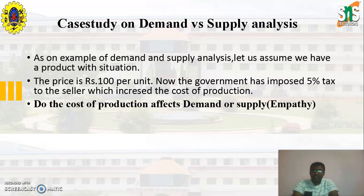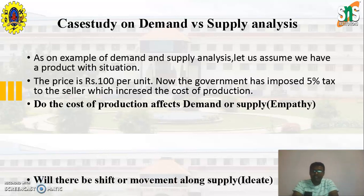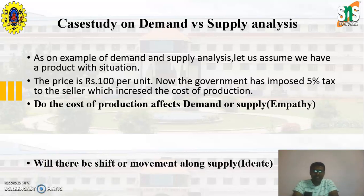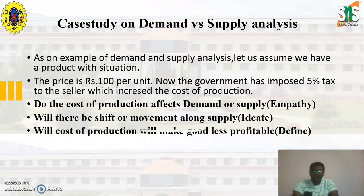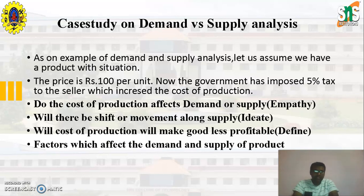The first question is: does the cost of production affect demand or supply? Second, will there be a shift or movement along supply? Third, will the cost of production make goods less profitable? And the last one is: which are the factors which affect the demand and supply of the product? These are the 4 major things we are going to discuss in this case study.